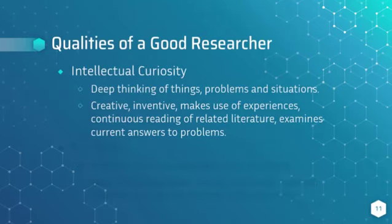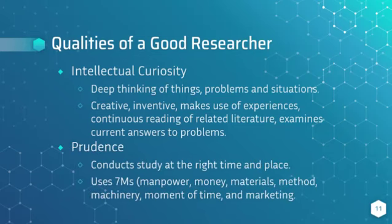Qualities of a good researcher. Intellectual curiosity: A researcher deeply thinks about different things, phenomena, and problems in his or her environment. A researcher is creative, inventive, makes use of experiences, continuously reads related literature about problems he or she is interested in, examines answers to problems, and is overall keen to various information. Prudence: A researcher conducts study at the right time and place. A researcher is aware of limited time and resources and makes use of the 7Ms — manpower, money, materials, method, machinery, moment of time, and marketing. These are all taken into account by a good researcher.